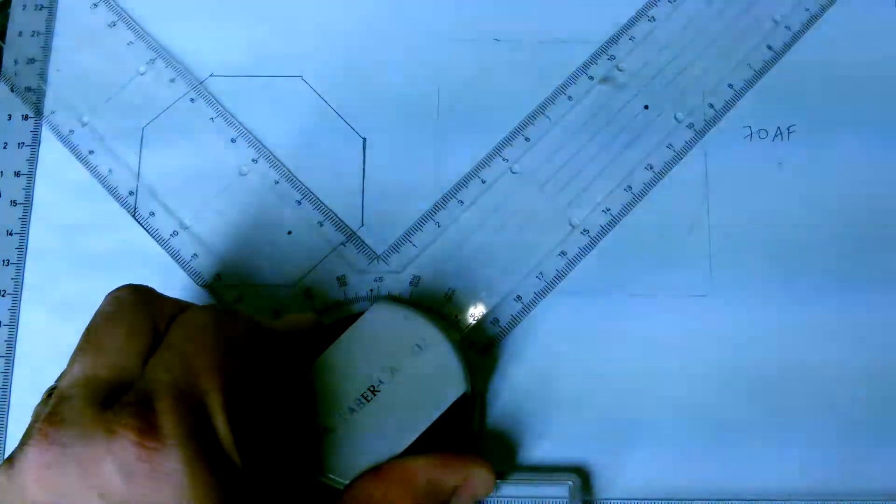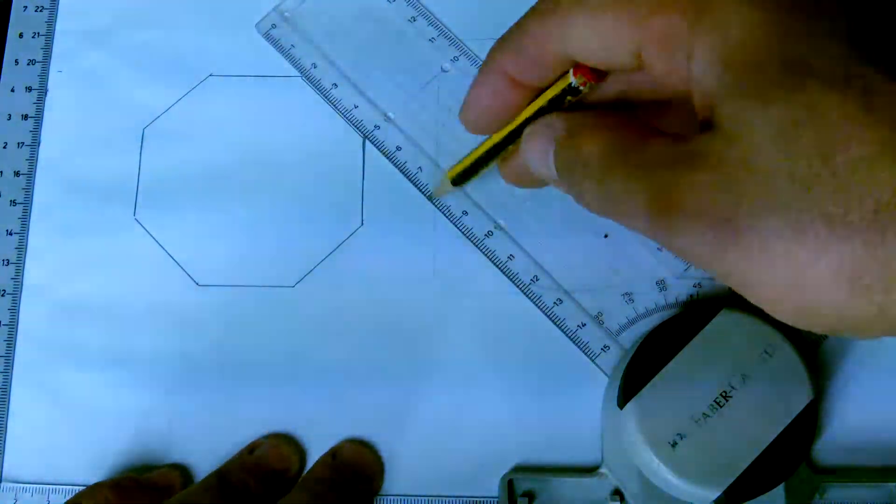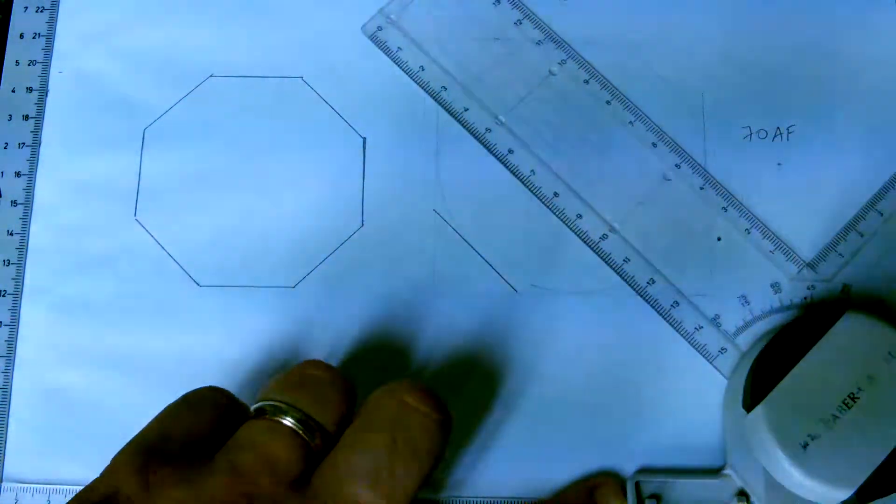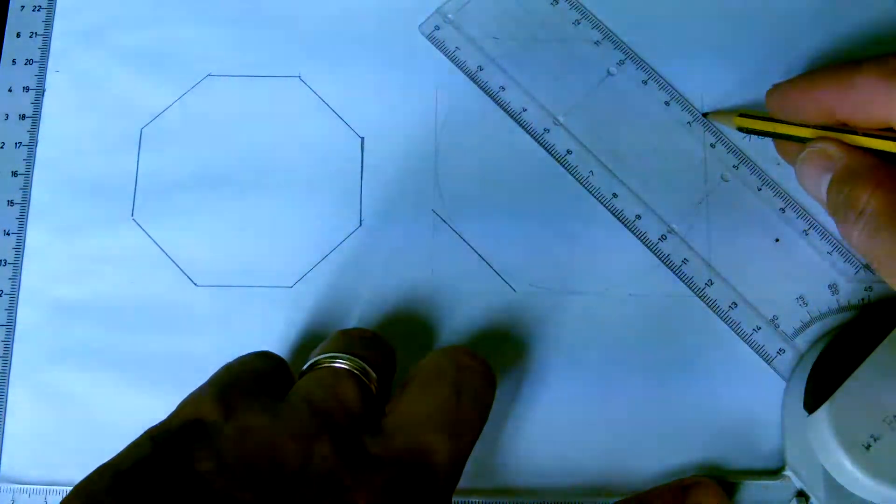But the octagon has got eight sides at 45 degrees. So now I know the angle. Since I know the angle, now I know the length of the side.